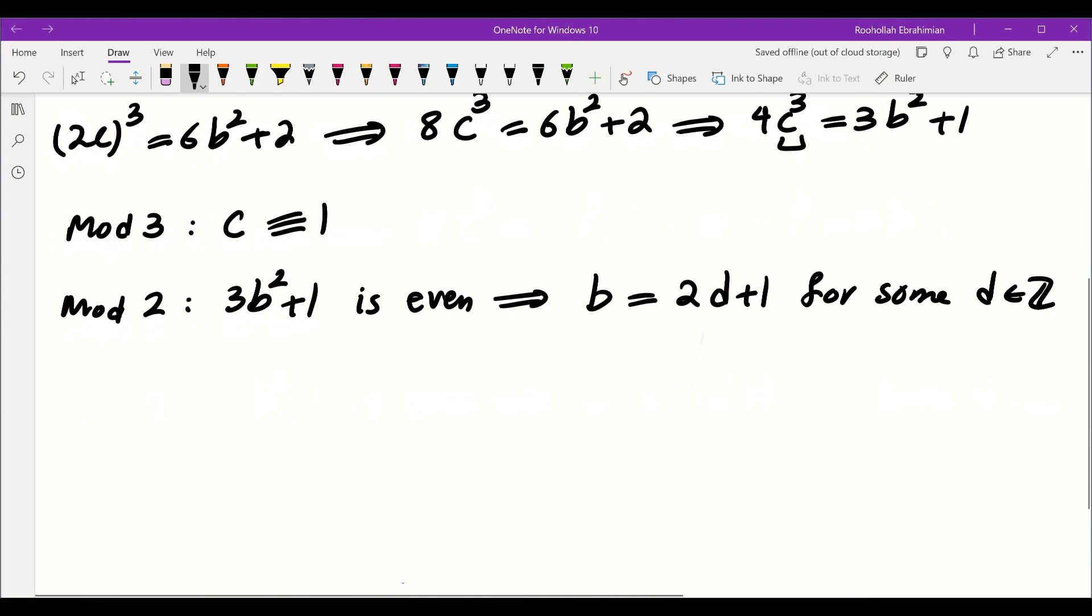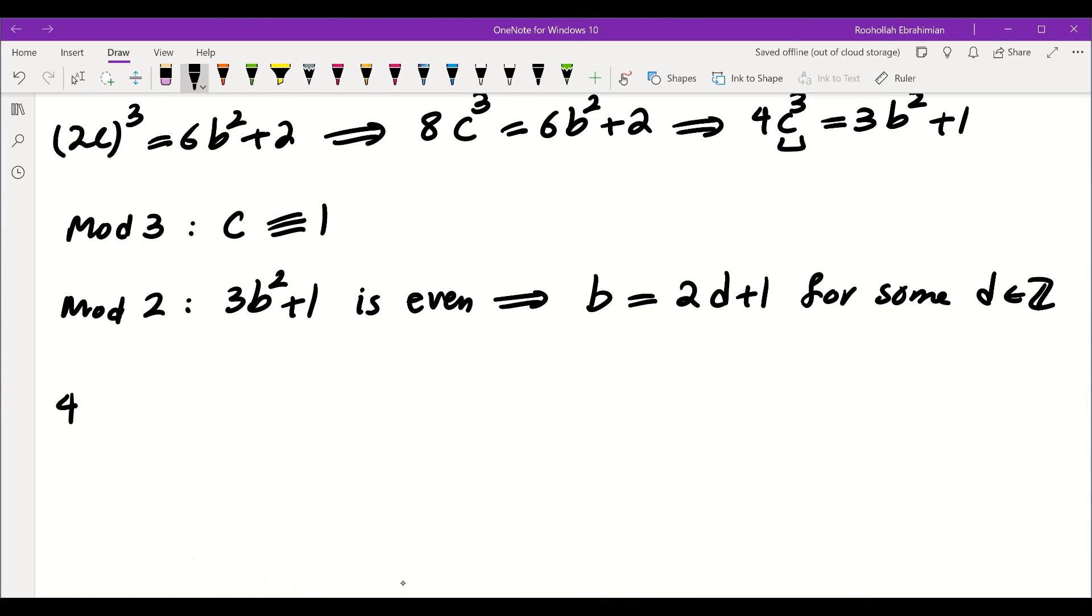Then I take that and plug it back into the equality that I have. So I have 4c cubed equals 3 times 2d plus 1 squared plus 1. And that gives me 3 times 4d squared plus 4d plus 1 plus 1. And that gives me 12d squared plus 12d plus 4.